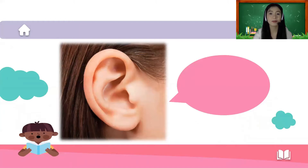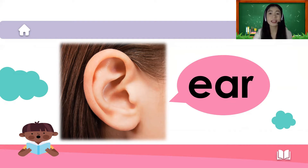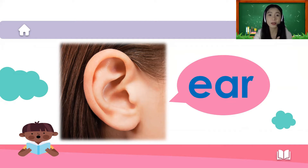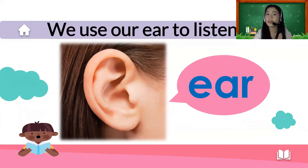For example, we have the ear. Can you touch your ear? Good job! Let us spell the word ear: E-A-R. How many ears do you have? One, two — two ears! We use our ears to listen: to listen to music, to listen to someone who is talking, to listen to our parents.